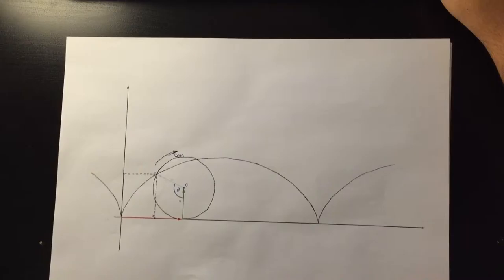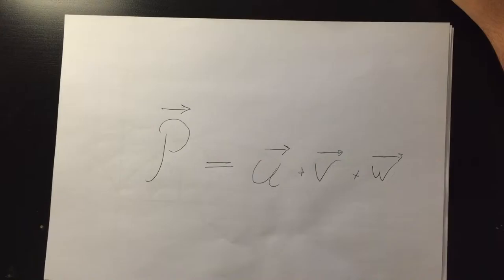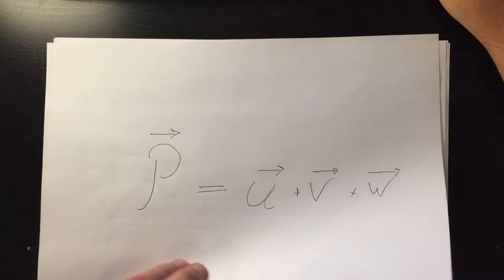The position vector of point p can be decomposed in the following manner. Vector p is equal to vector u plus vector v plus vector w, as shown in the graph.